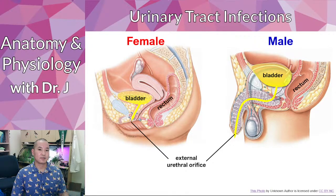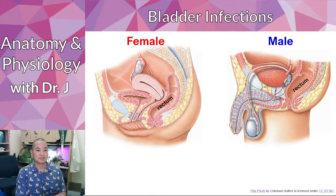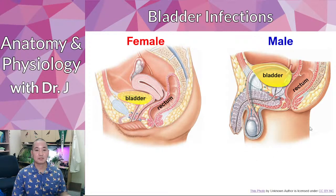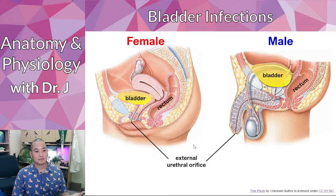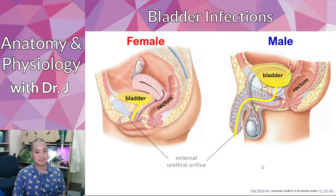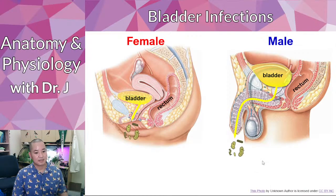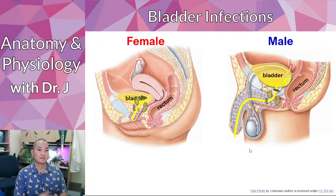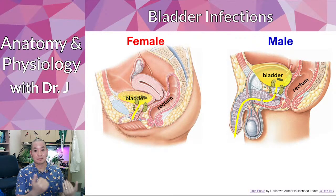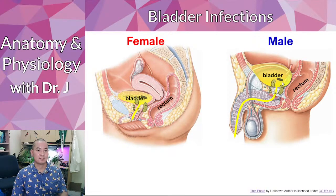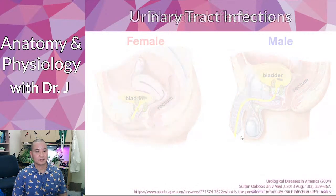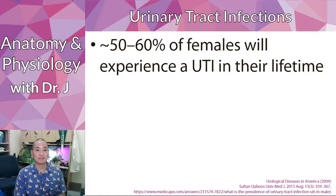Urinary tract infections affect males and females differently, partly due to urethra length. If bacteria from the rectum reach the external urethral orifice, the distance to the bladder matters. Flow of urine is also important — you don't want retrograde or backwards flow, as anything that impedes urine flow from the bladder can increase infection risk.